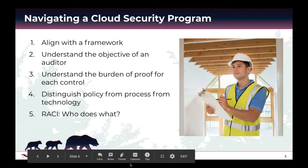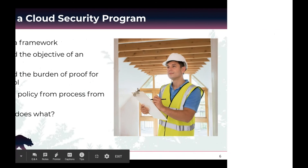Point four is distinguishing policy from process from technology. A policy is basically an assertion of what you will be delivering, accomplishing, and controlling. That's different from a process or procedure, which outlines specifically how you execute your policy. Some language will point to a technology, and certain key words help identify when a technology is being referred to versus just a policy or procedure. Knowing how to filter control language into these three categories helps you narrow down to what the deliverable actually is.